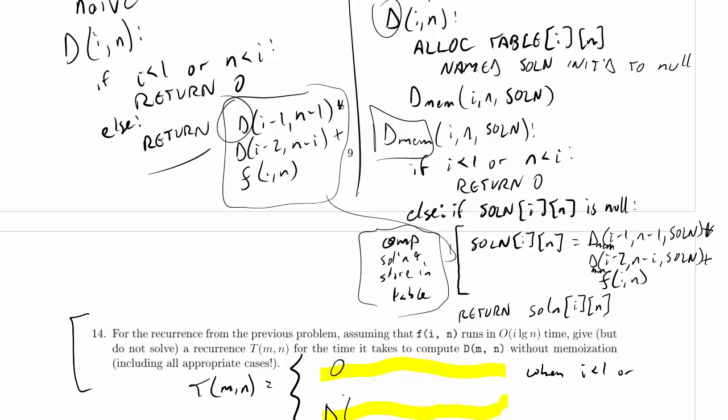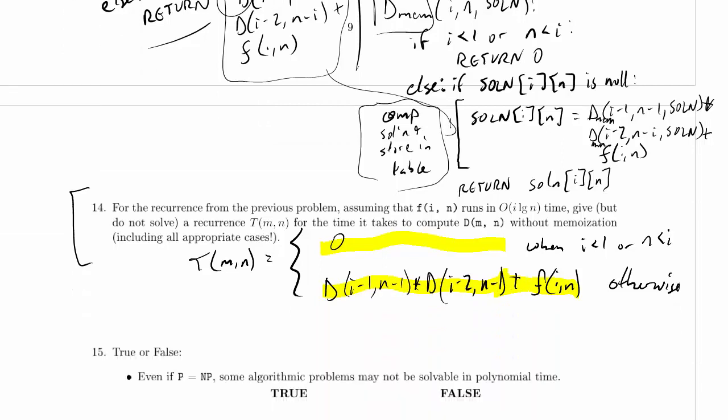So 0 when i is less than 1 or I can't remember what the other condition was, D of, oh I guess I can read it off of my code up above, so or n was less than i and D(i-1, n-1) times D(i-2, n-i) plus f(i,n) otherwise. And I'll go ahead and highlight that because I may need to fix that.